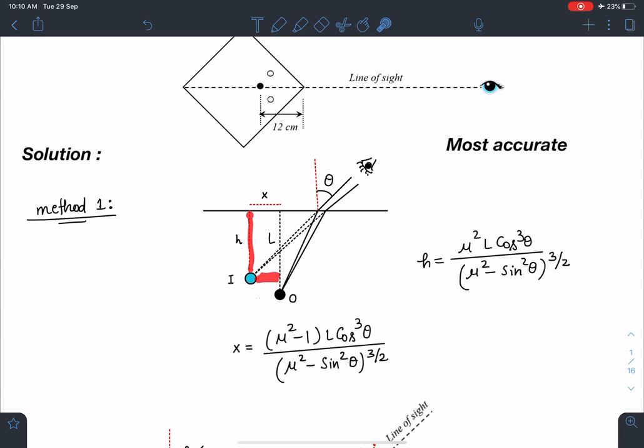So let's say some distance x it is shifting and this is apparent depth h. Normally it is l by μ. So here when we do the calculations, you can see these calculations are actually tough.